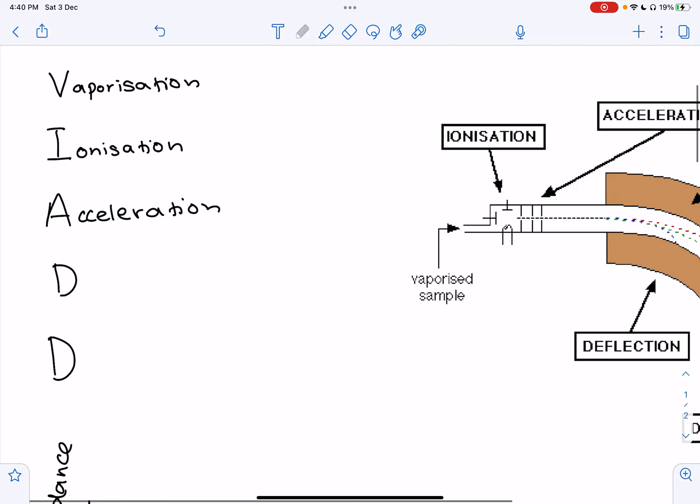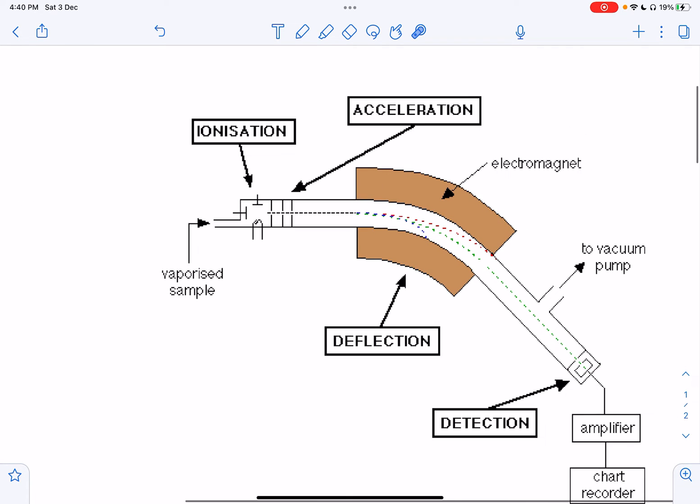The next step is deflection. The stream of positive ions is deflected by a magnetic field. As you can see, we have our magnetic fields here. The size of the deflection depends upon the ratio of the ion's mass to its charge. The lighter the ion's mass, the more deflection. Ions with a smaller charge will deflect less, while ions with a charge greater than plus one will deflect more.